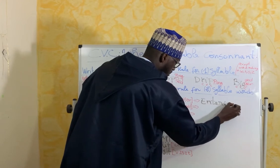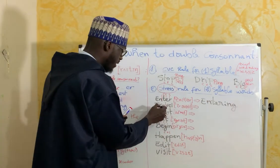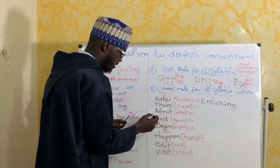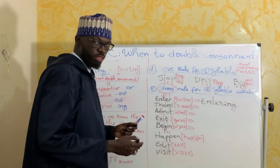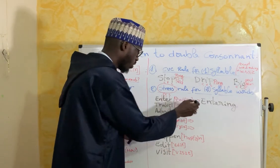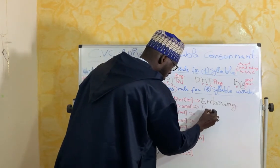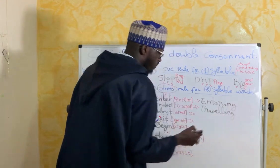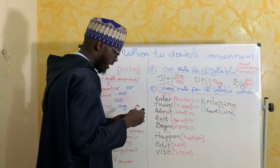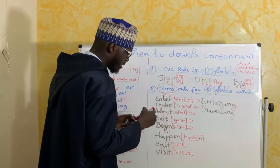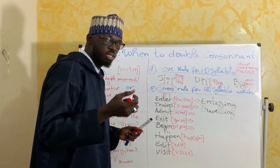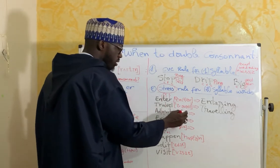We have: 'travel,' 'admit,' 'exit,' 'begin.' For 'travel,' the accent is on the first syllable, so we write 'traveling' or 'traveled' — no doubling. For 'admit,' the accent is on the second syllable, so we double the consonant.